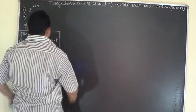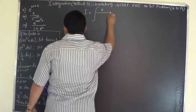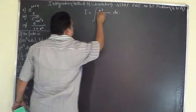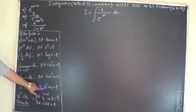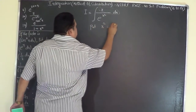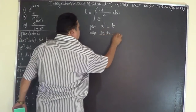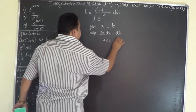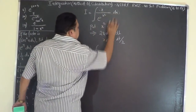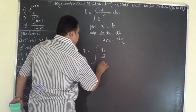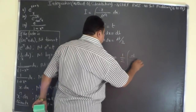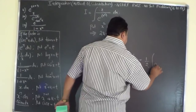Problem number 17: I equals integral of x over e to the power of x squared dx. If the problem consists of x dx as a factor, put x squared equals t. Differentiating gives 2x dx equals dt, so x dx becomes dt by 2. Therefore the problem becomes I equals integral of dt over 2, divided by e to the power of t, which is one half integral of e to the power of minus t dt.